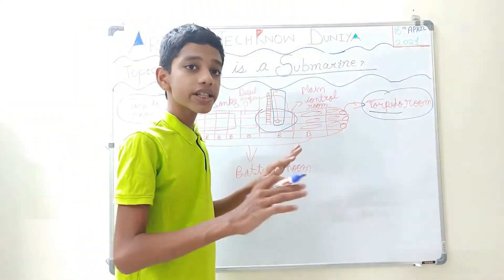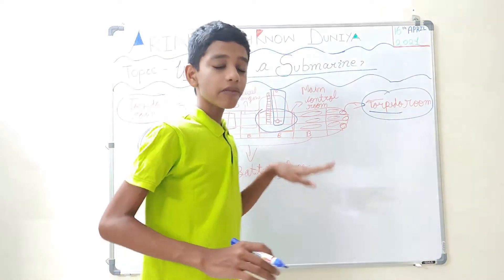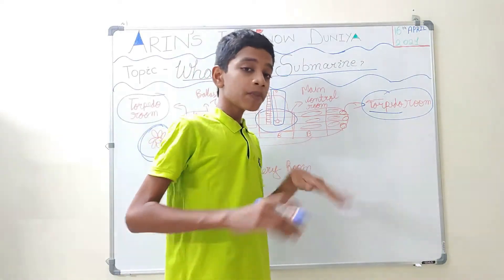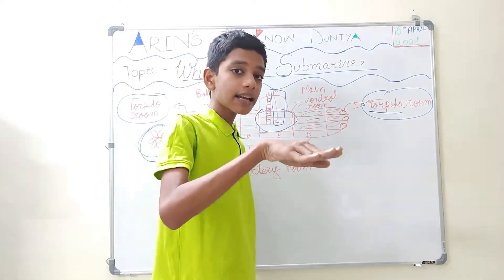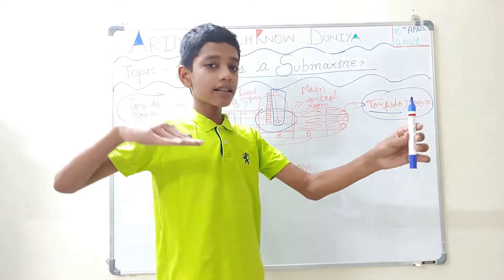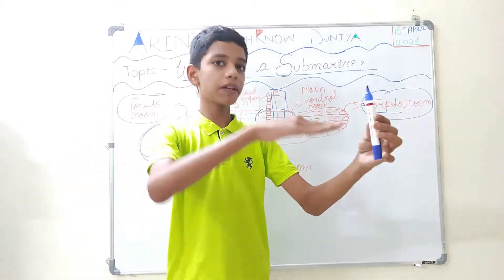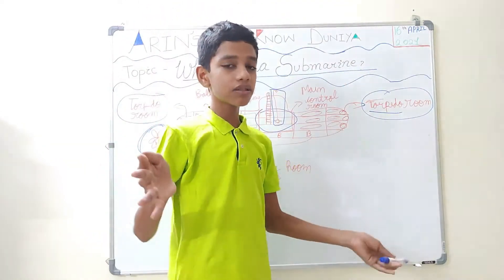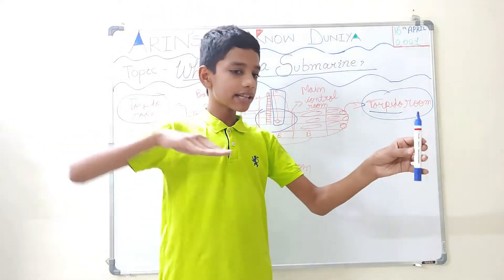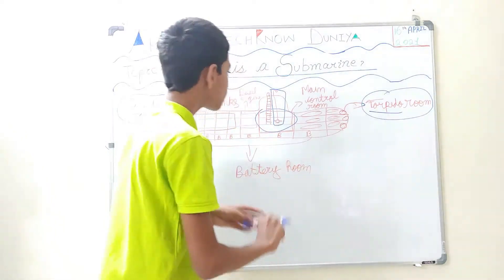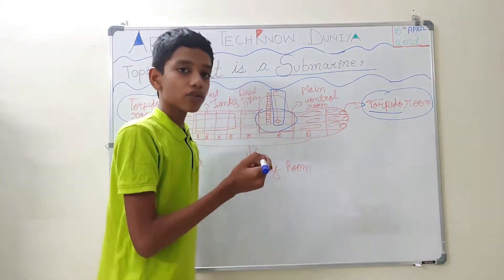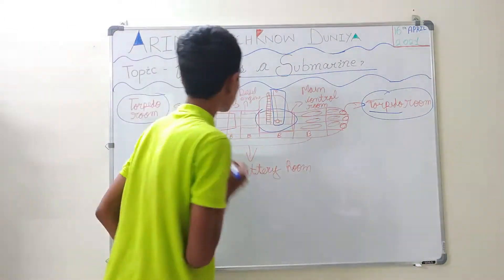What happens is the discussions happen where the submarine has to go, on which path it has to go. If here is the submarine which is already destroyed, it will crash and it will also get destroyed. It has to change path. This all is discussed in the control room and the submarine is operated from here.